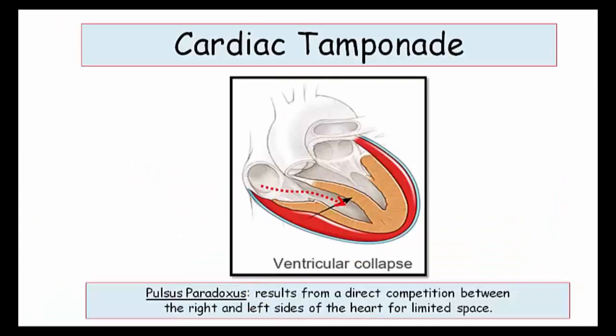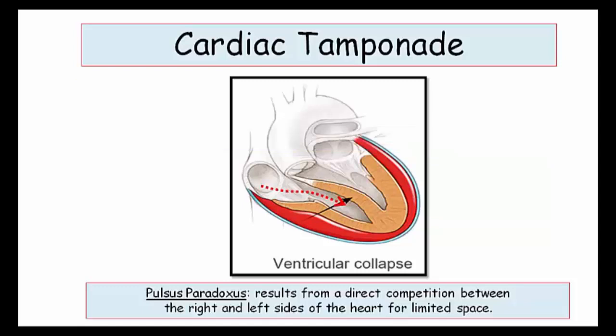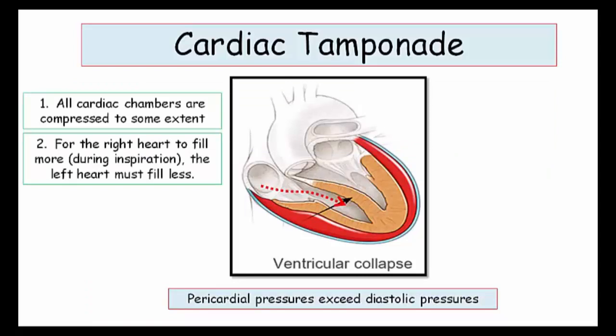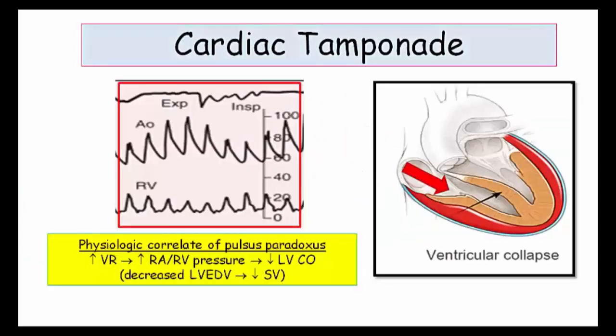Pulsus paradoxus can be thought of as a direct result of competition between the right and left sides of the heart for limited space. In tamponade, all the cardiac chambers are compressed to some extent. But when the intrapericardial pressures exceed diastolic pressures, tamponade physiology is seen. For the right heart to fill more during inspiration, the left heart must fill less. Since the free wall of the right ventricle cannot distend into the pericardial space, the interventricular septum must bulge into the left ventricular chamber. The combination of decreased pulmonary venous return to the left chambers and the IV septum bulging into the left chamber results in a decrease in cardiac output, clinically recognized by pulsus paradoxus.